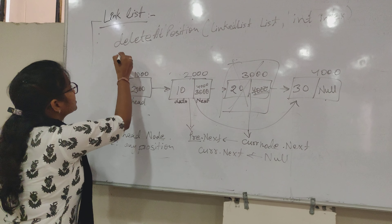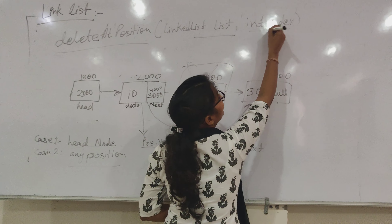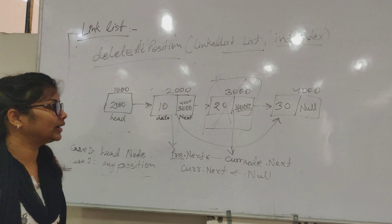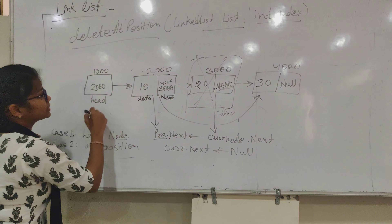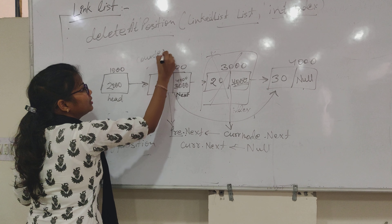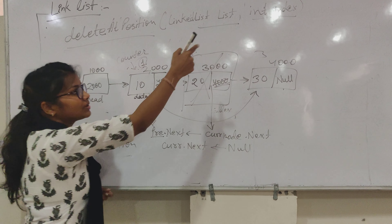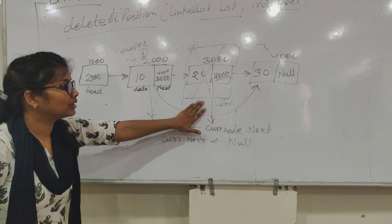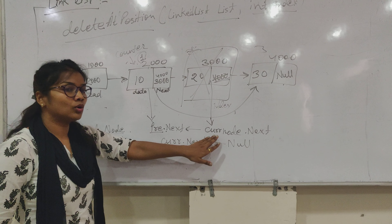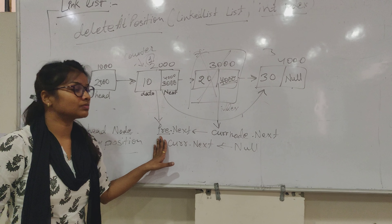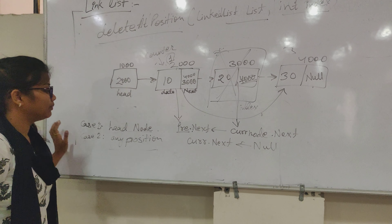You will pass this method the list on which deletion will be performed, and you will pass the index which will be particularly deleted. To hold the index, I put a counter. I will start counting: 1, 2, 3. Suppose when I have index 2, I have two pointers from the beginning, and I will save the previous node. This way I can perform deletion at any position.